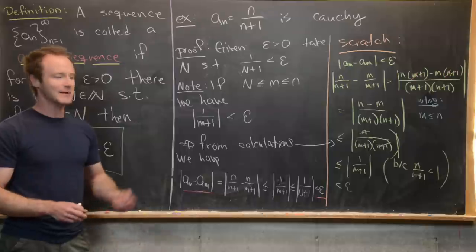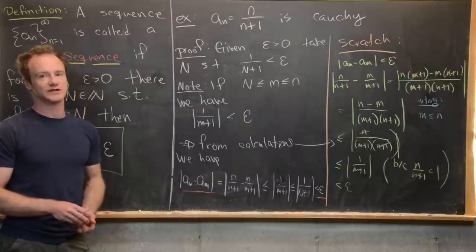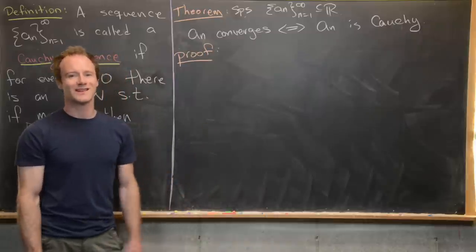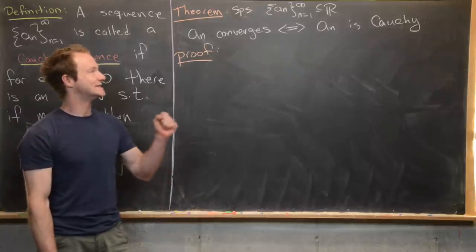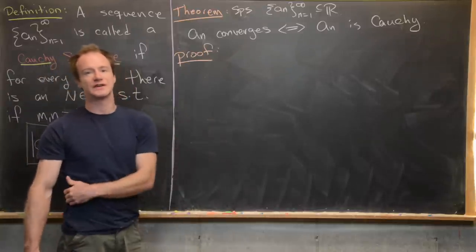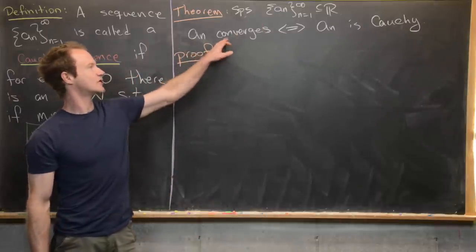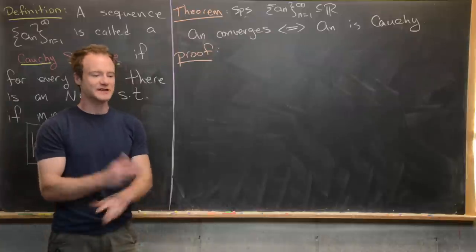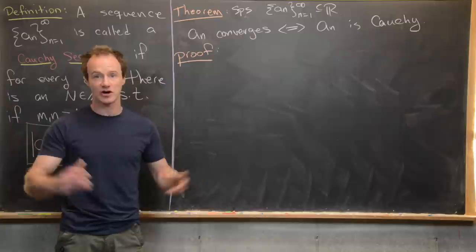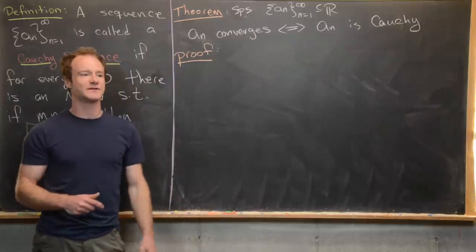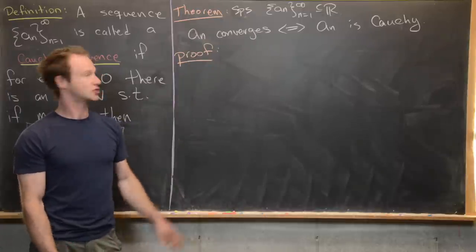Now we want to prove the classic result that in the real numbers a convergent sequence is equivalent to a Cauchy sequence. In other words, if we have a sequence of real numbers, it converges if and only if it is Cauchy. This is not true outside of the real numbers, so maybe post in the comments if you know some setup where this equivalence fails.